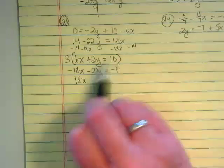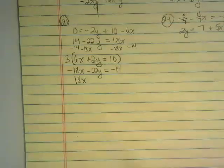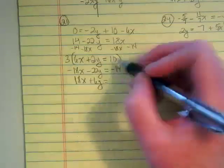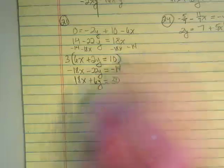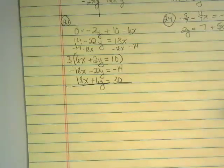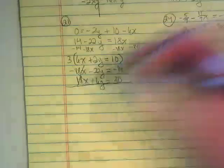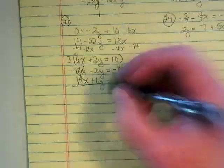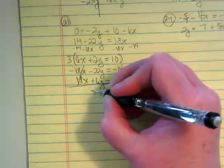The 3 gets multiplied by everything in that first equation, though. So 3 times 6x is 18x, 3 times 2y is going to be 6y, and 3 times 10 is 30. And then with elimination, we just combine like terms in both equations. This one is canceled out. Negative 22y and positive 6y gives us negative 16y.